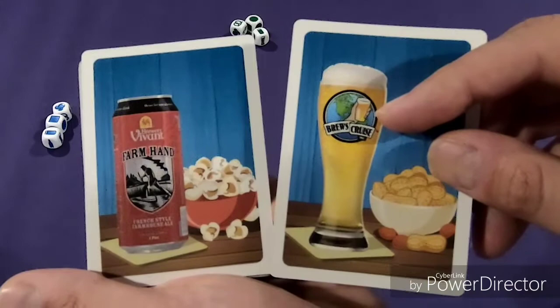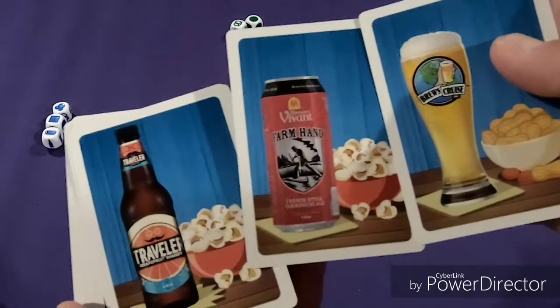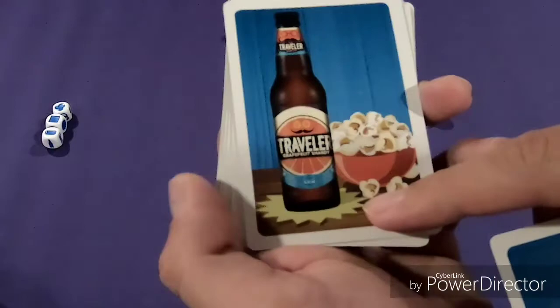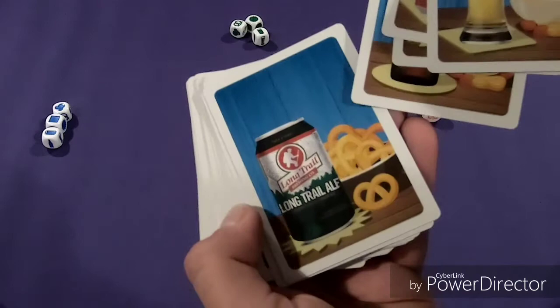As you can see, this one is in a glass. There's a bottle, can, or glass. Two of these have popcorn, one has peanuts. This has a star coaster, these have square coasters. So we're trying to match popcorn, peanuts, pretzels, star, round, square, or can, bottle, glass.